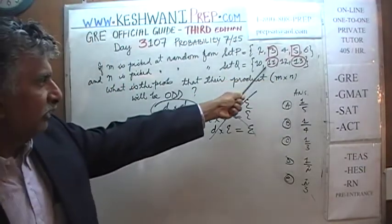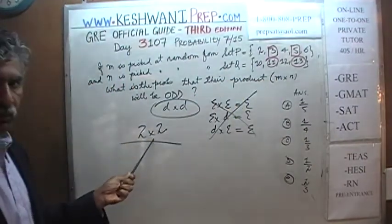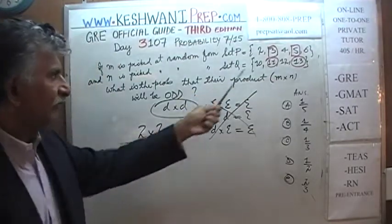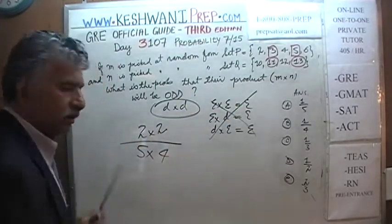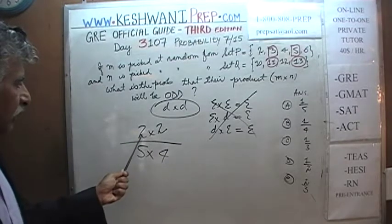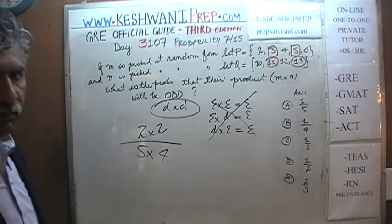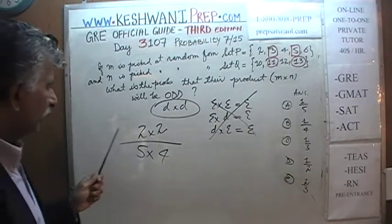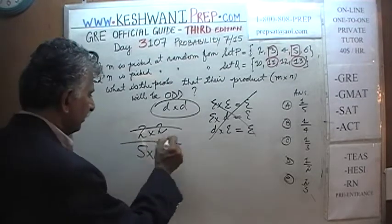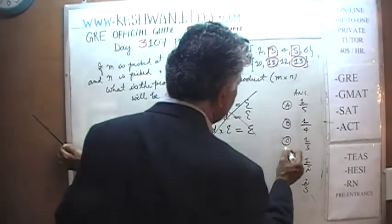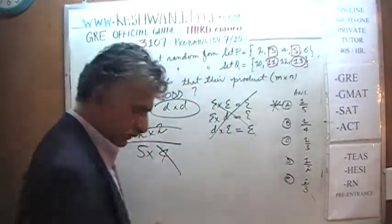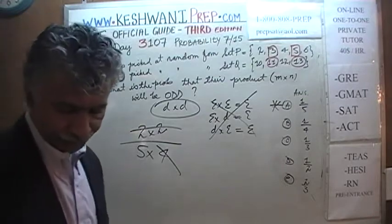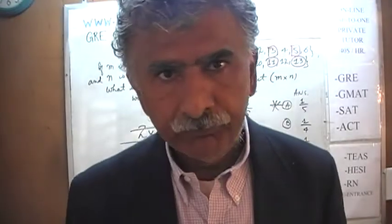There are 5 total elements in set P and 4 in set Q, giving 20 different products in total. Out of those, only 4 result in an odd product. 4 out of 20 simplifies to 1/5. The correct answer is 1/5. That's all — see you tomorrow. Bye now.